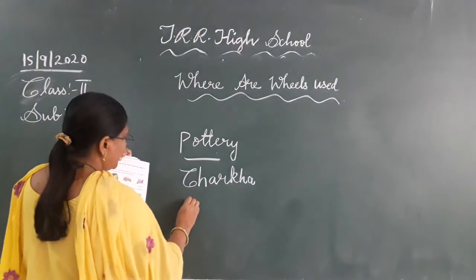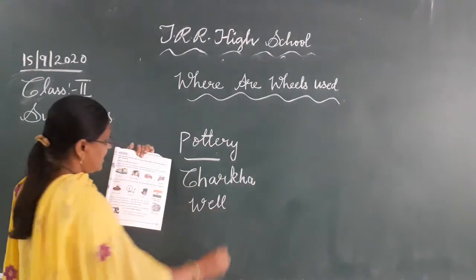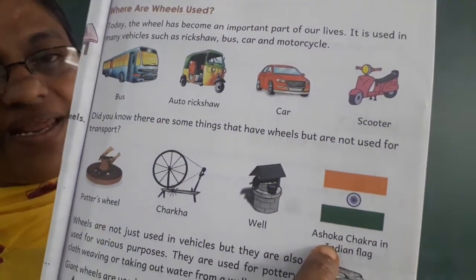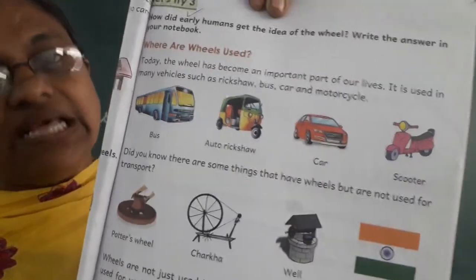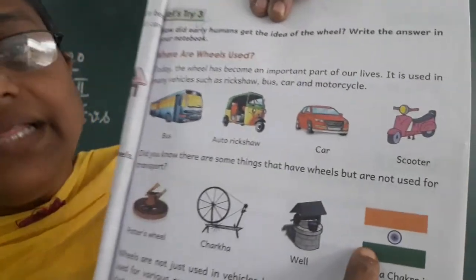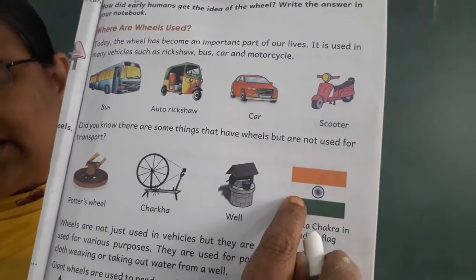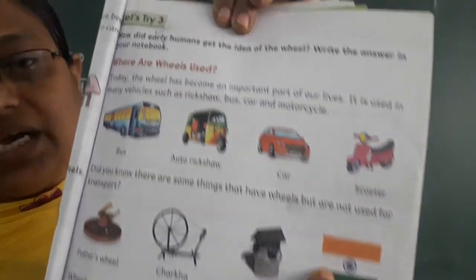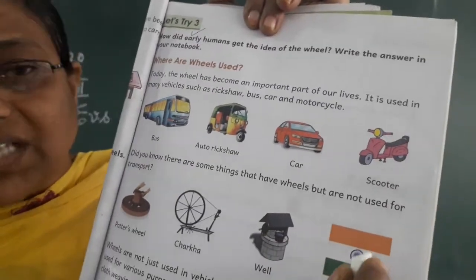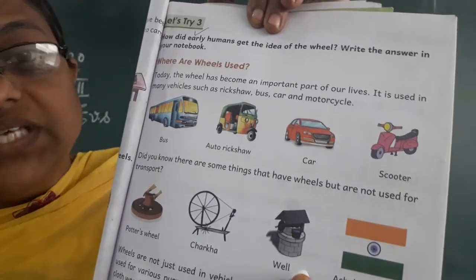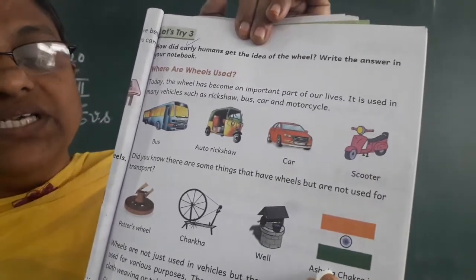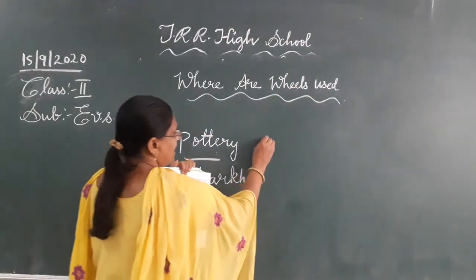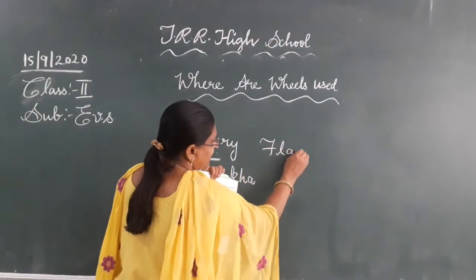See, what is this? Very good — this is our national flag. What is in the middle, that blue thing? That is called Ashoka Chakra. It also looks like a wheel. So we are using the wheel in our flag too. The flag — F-L-A-G.